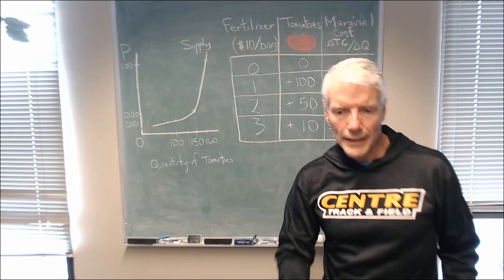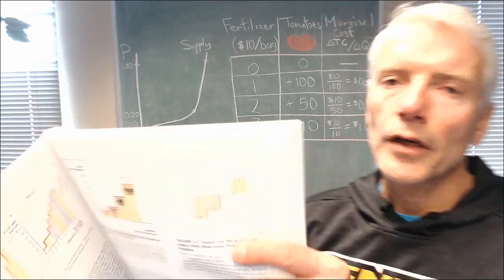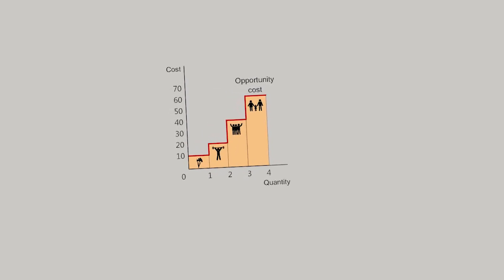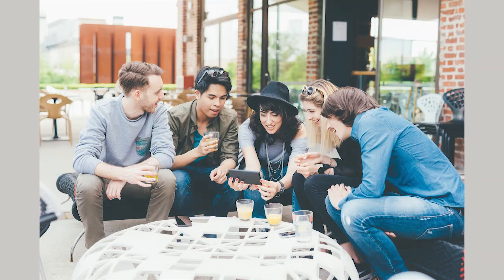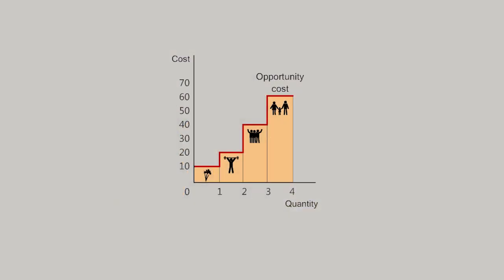One of the reasons for that is explained in my book, where it talks about the increasing opportunity cost of time. As you make more of something, you have to carve time out of increasingly valuable alternative activities in your day. The first unit might be made in time that you would otherwise spend fiddling in your garden.